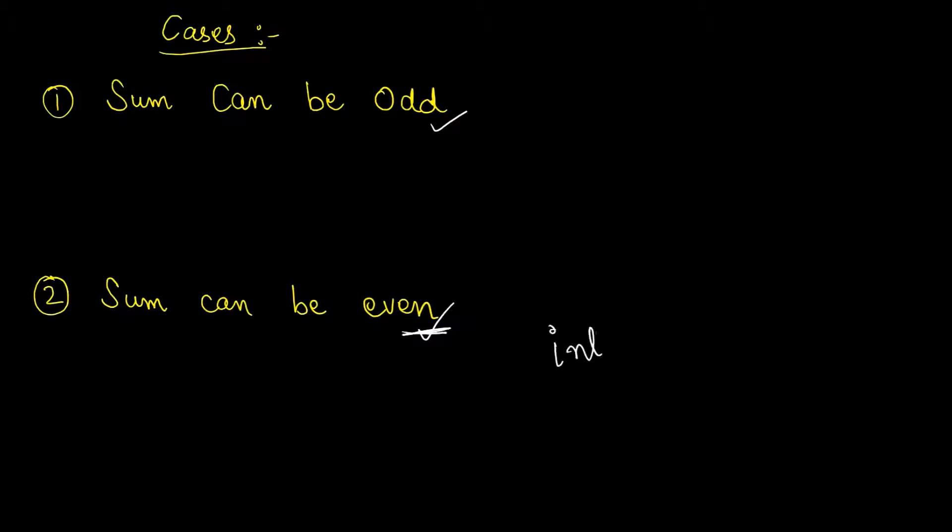Because here we'll be taking in int, there is no float value allowed over here. So for dividing int into two subsets, odd number we won't be able to take it. Now when we have even number in sum, the cases can be either we can partition or we cannot.